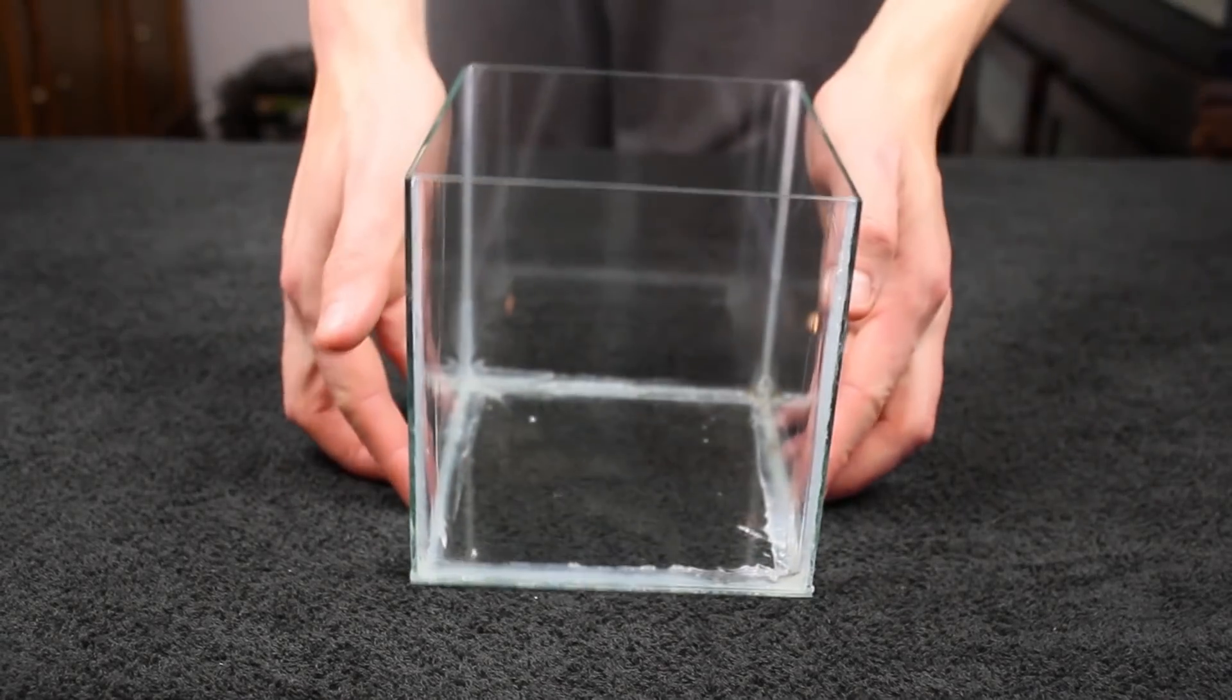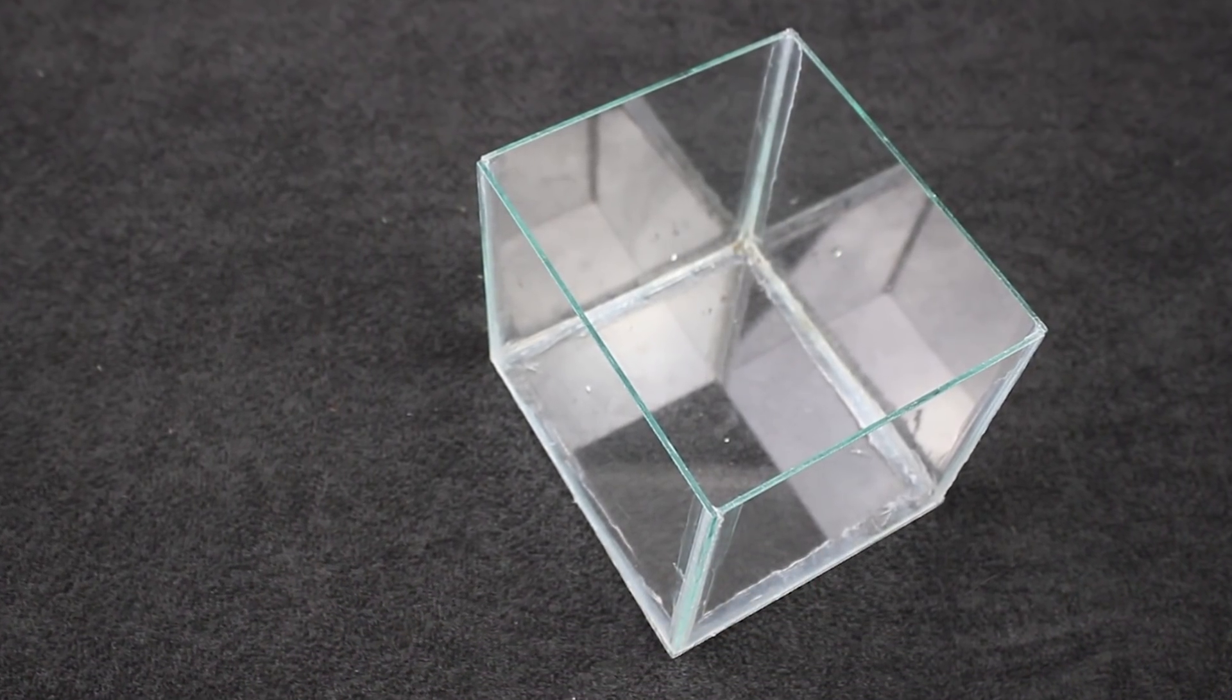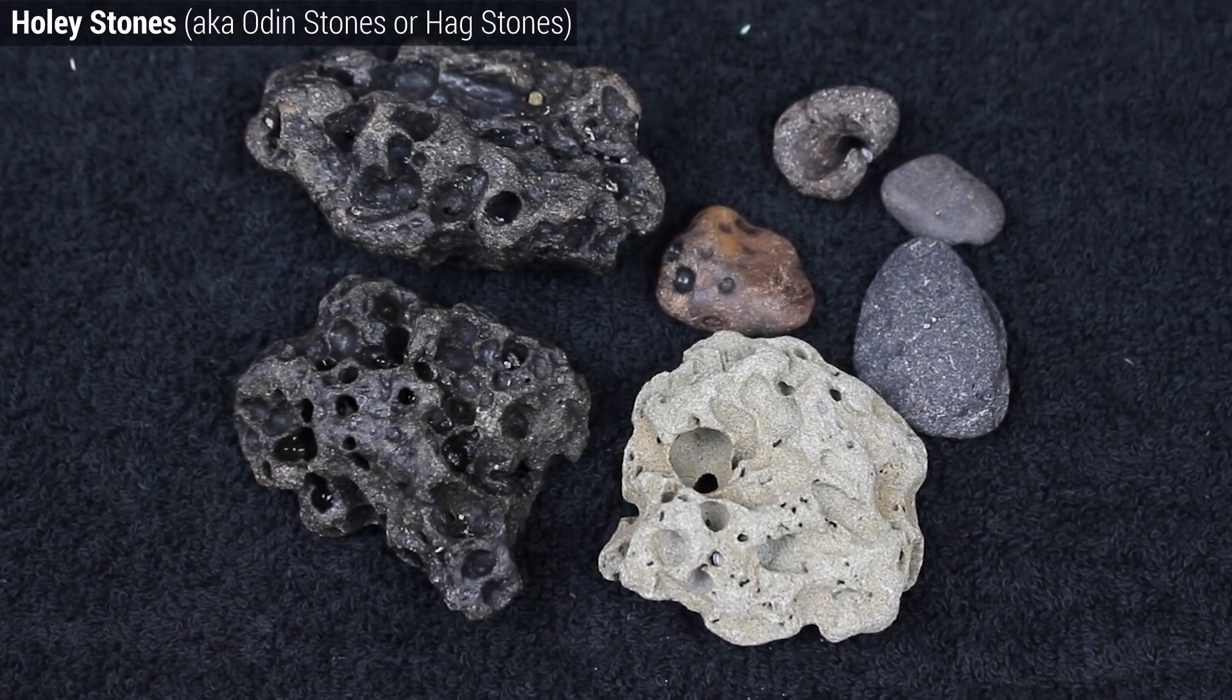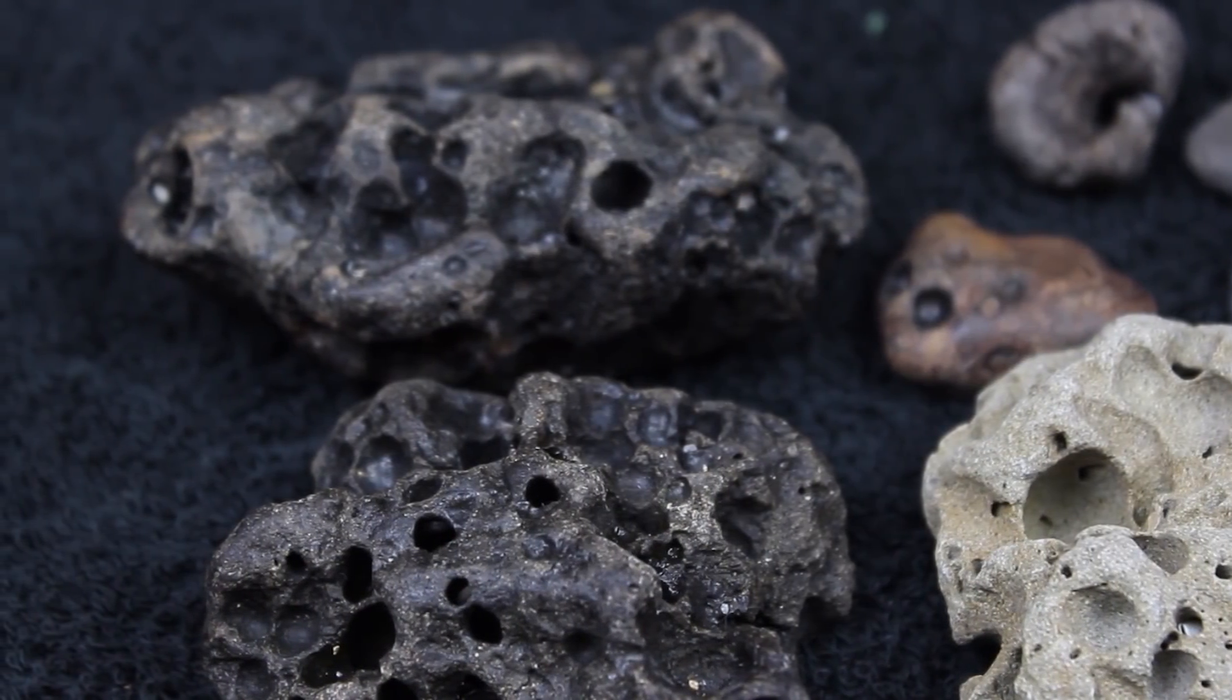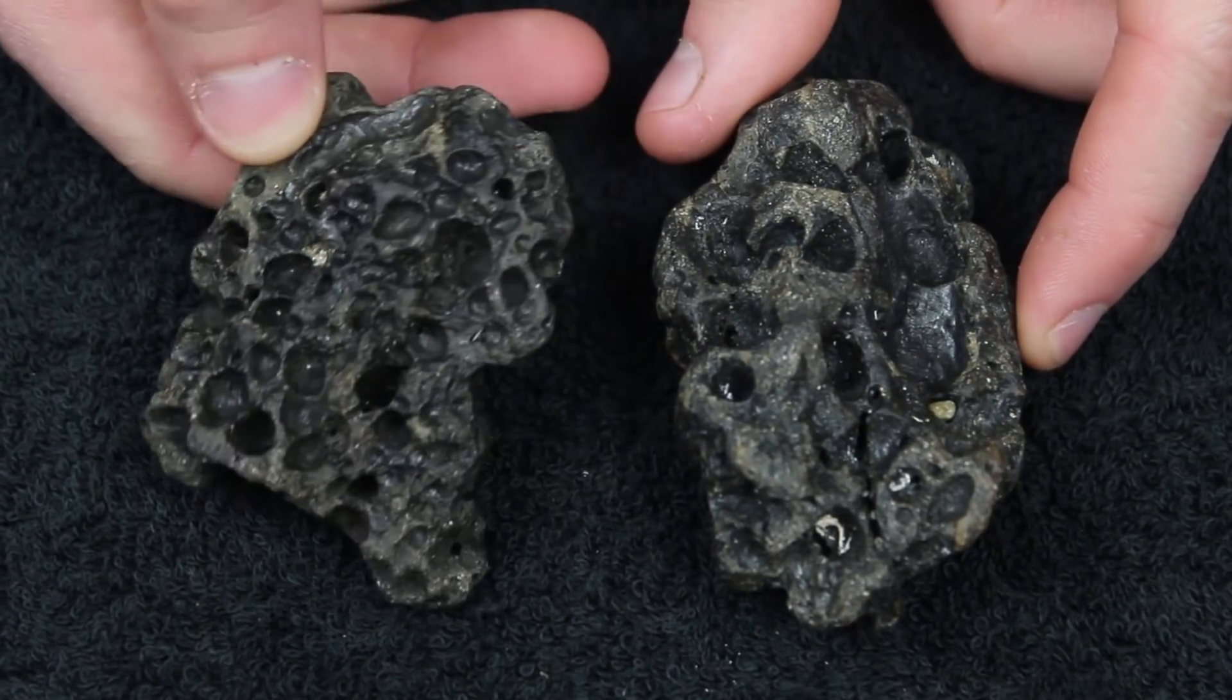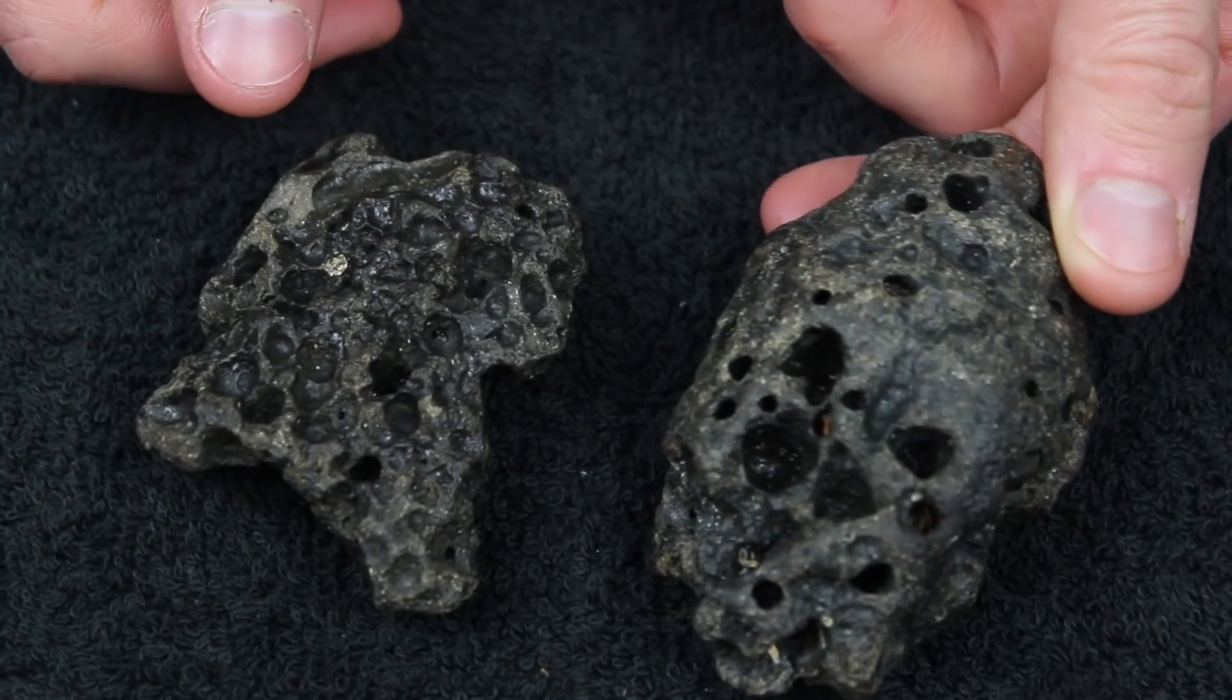Now that the aquarium is built, let's set it up. I'm not using much for this project, but what I have should make a pretty neat build. First off, I have a few holy stones, otherwise known as Odin stones or hag stones. These are really cool because as their name implies, they are full of holes. This will be a fairly simple scape, so I think the detail in these stones will help add interest to the overall aesthetic.